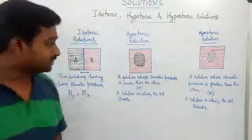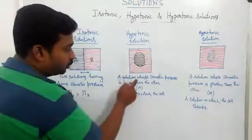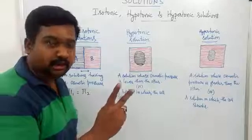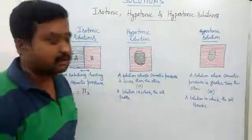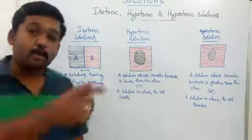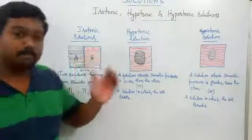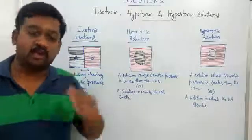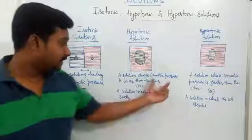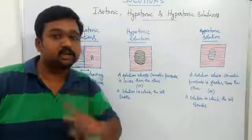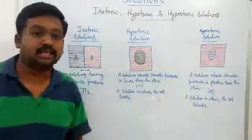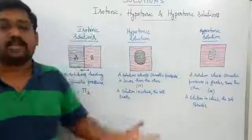The second case is hypotonic solutions. Here, a solution whose osmotic pressure is lower than the other. If we have two solutions separated by a semi-permeable membrane, whichever of the two has lower concentration is called the hypotonic solution. The word 'hypo' means lower, so a lower concentration or lower osmotic pressure solution is called hypotonic. Note that osmotic pressure and concentration can be used interchangeably when temperature is constant.